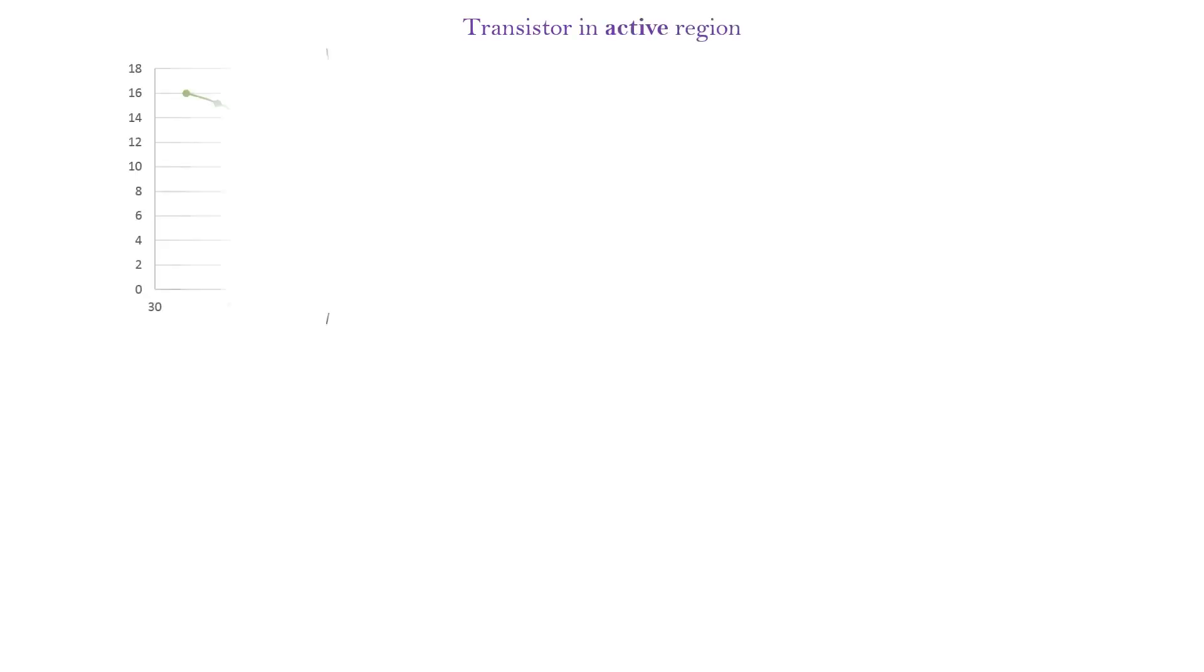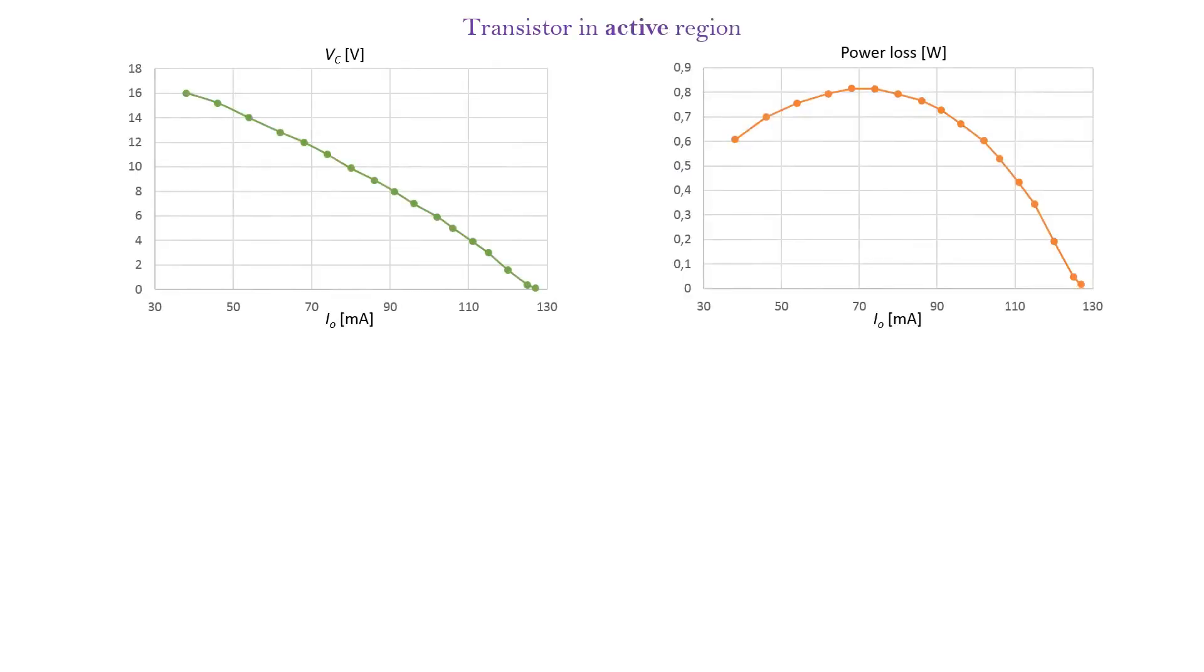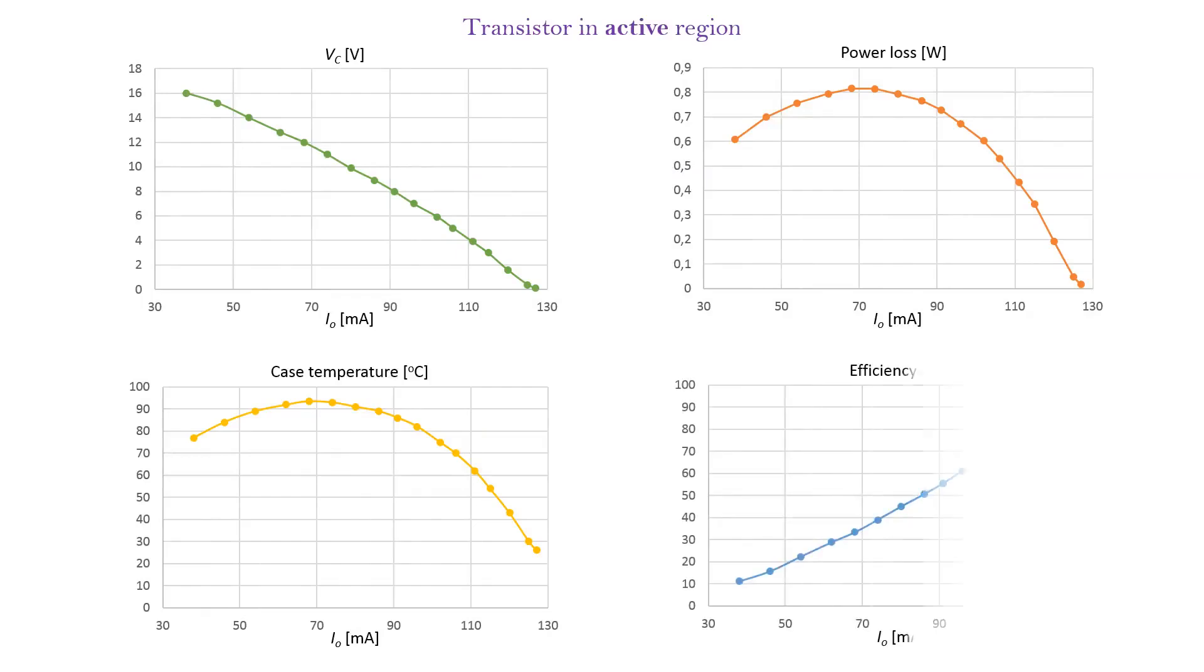The transistor operates in the active region, resulting in power losses. The losses and the temperature of the transistor become maximum when the current takes the value of 68 milliampere.